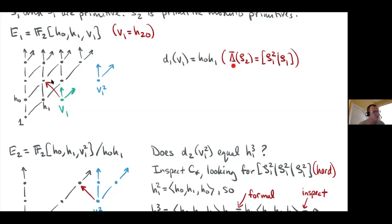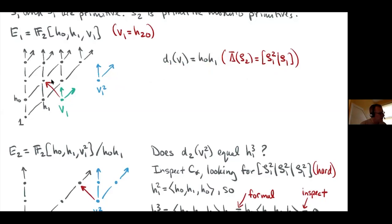The d_1 differential is easy to compute from the coproduct. Since the reduced coproduct of zeta_2 is zeta_1^2 | zeta_1, we get d_1(v_1) = h_1·h_0. That's the red arrow in the chart. All the multiples of v_1 hit all the multiples of h_0·h_1 by linearity. Also, v_1^2 is a d_1-cycle because by the Leibniz rule, d_1(v_1^2) involves a factor of 2, which is zero over F_2.